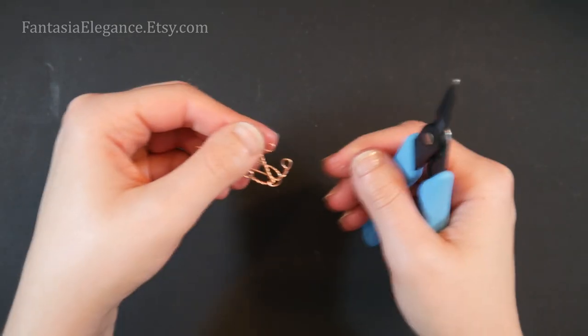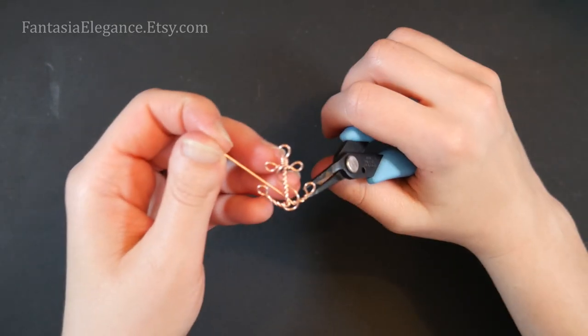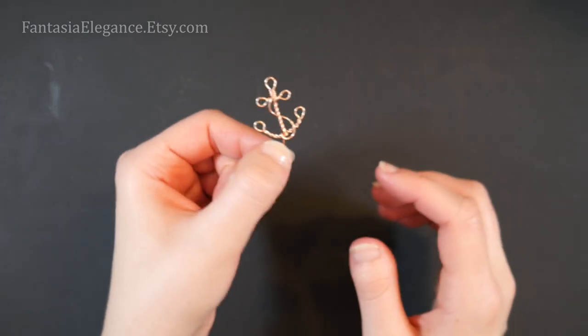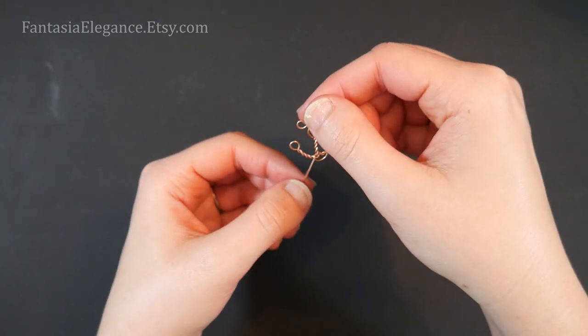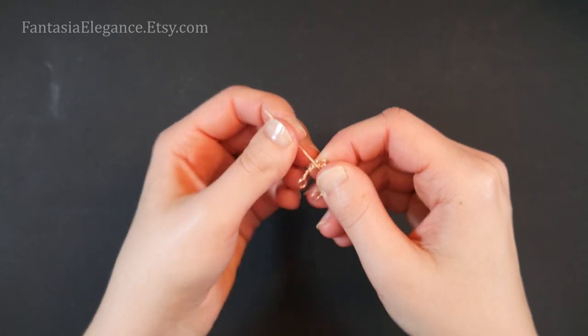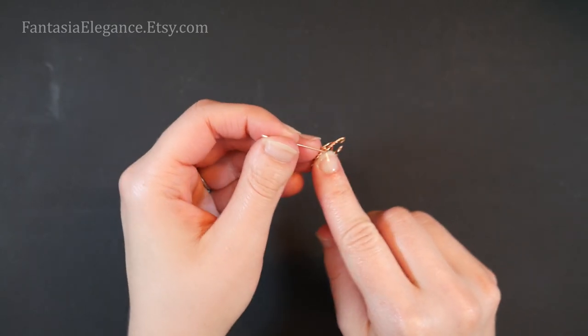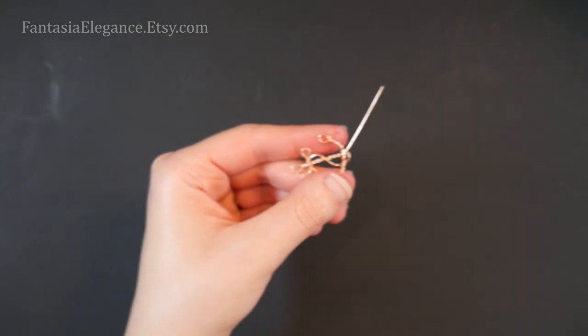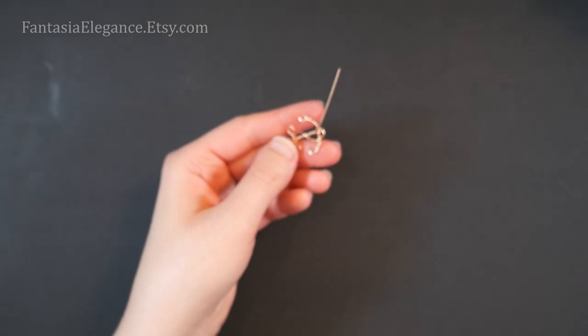All right, now I'm just adjusting everything to make sure it's lying how I want it to. And then to finish off this last little tail, what I'm just going to do is wrap him down in this space I have right here, and on the back I will snip off the end.